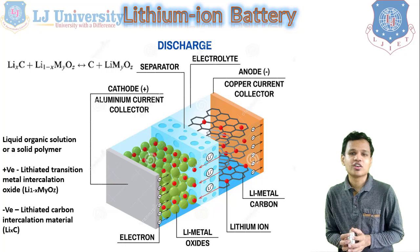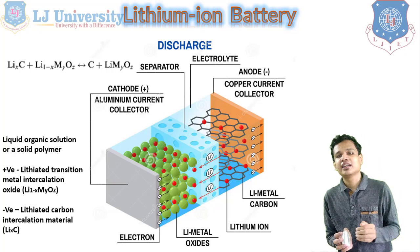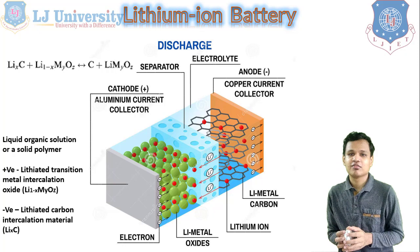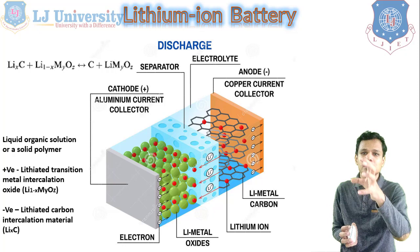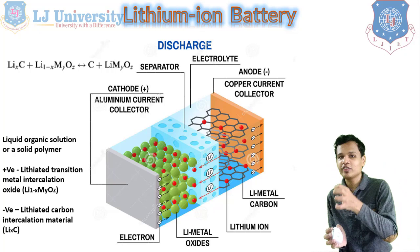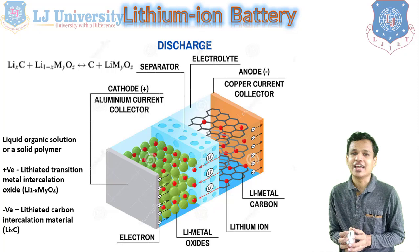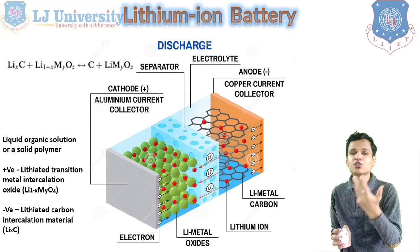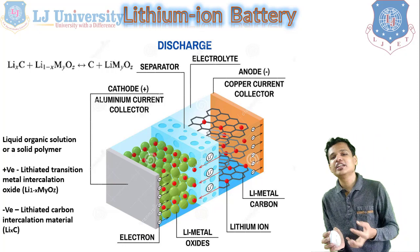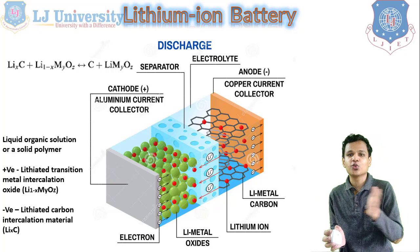Now, the procedure for discharging and charging: LixC plus Li(1-x)MyOz will be converted such that the lithium ion from the negative electrode goes towards the positive electrode, creating LiMyOz. So the lithium has gone from the negative to the positive electrode during discharging. During the charging process, the lithium will go from the positive to the negative electrode. This is how the lithium ions go to and fro during the discharging and charging process.